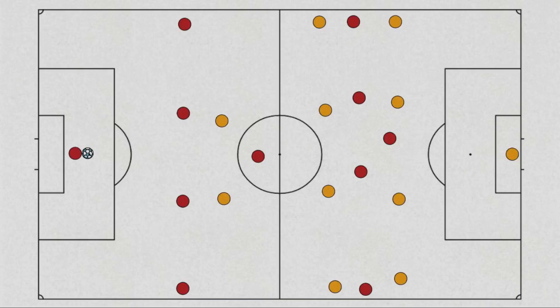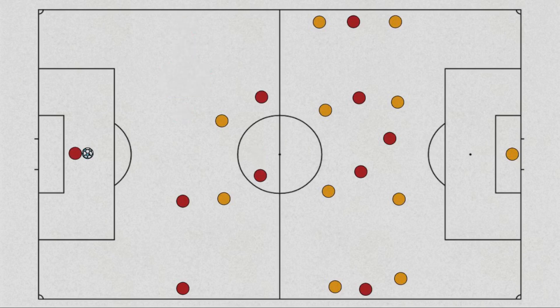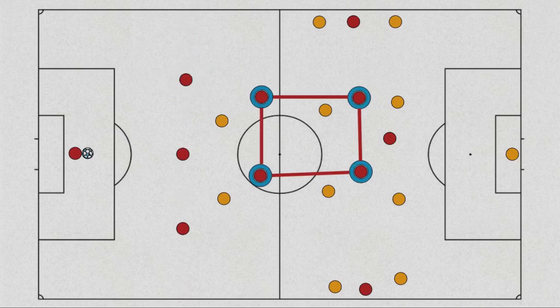In part 2, I want to talk about the box midfield Ten Hag employed. Shaw was inverted from left-back to create Ten Hag's box midfield. The whole purpose of a box midfield is to create a central overload, and in theory United could have achieved this against Watford's 4-4-2.